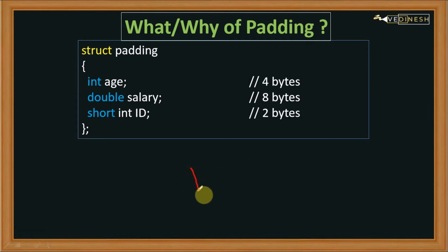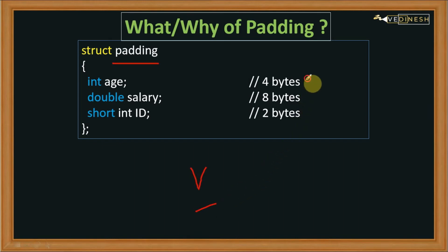Let's say I create a variable of this data type — that is 'padding' — then how much memory will be allocated to this variable? You might be thinking it should be four plus eight plus two, that is 14 bytes. But that is not the case — due to padding, the space occupied in memory by this variable differs.